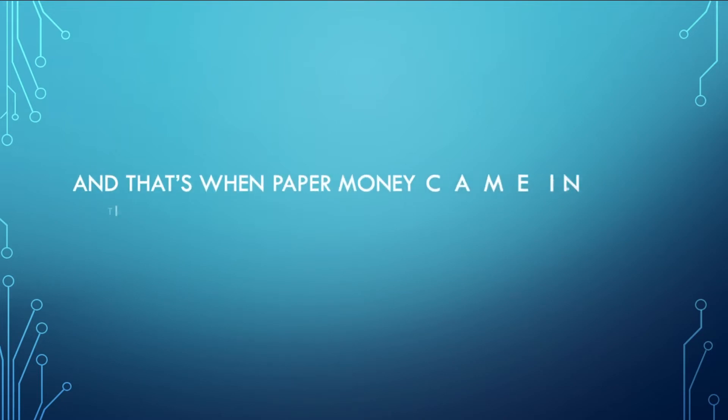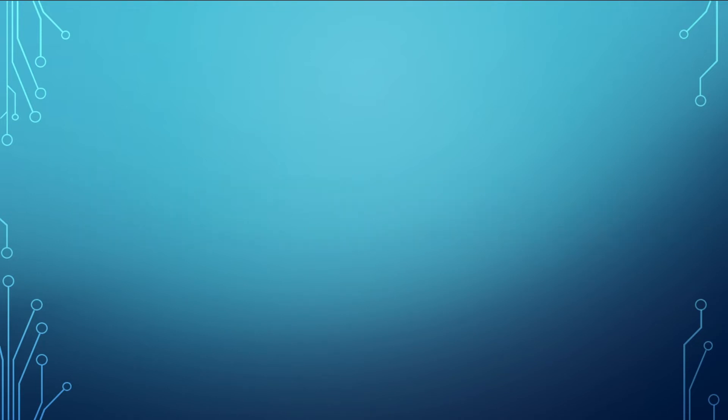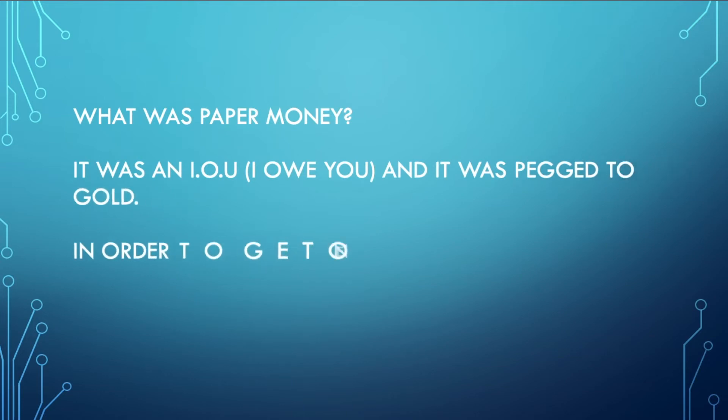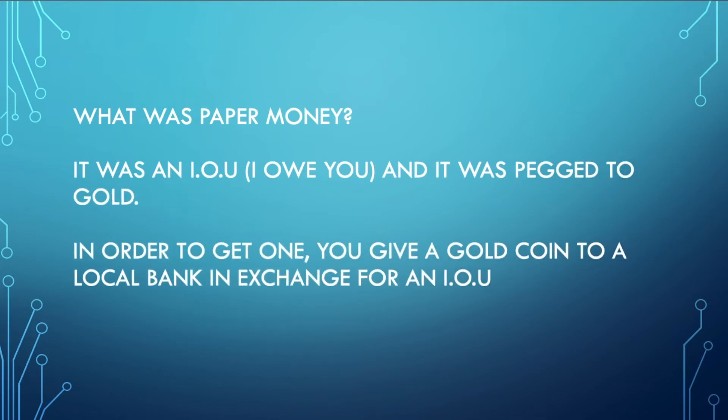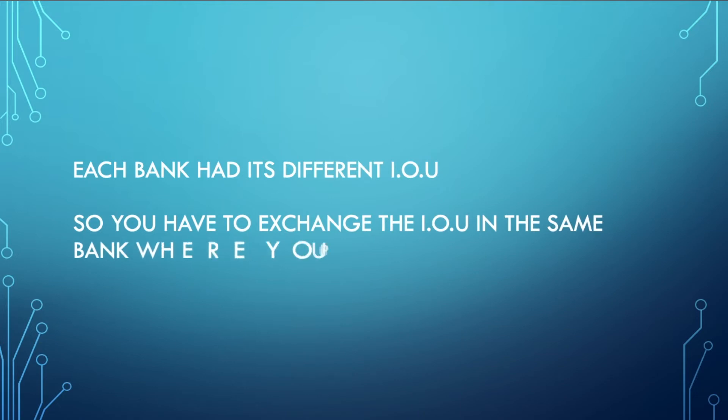And that's when paper money came in. It was first used by the Chinese. Europeans started adopting it in the 17th century. What was paper money? It was an IOU and it was pegged to gold. In order to get one, you gave a gold coin to a local bank in exchange for it. Each bank had its different IOU, so you have to exchange it in the same bank where you put the gold coin in.